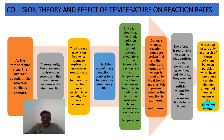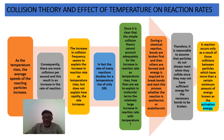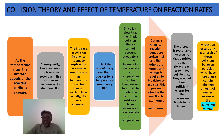Since it is clear that the simple collision theory cannot account adequately for the increase in reaction rate as temperature rises, how then are we to explain, in molecular terms, the relatively large increase in reaction rate with temperature? During a chemical reaction, bonds are broken first, and then bonds are formed, and energy is required to break bonds and start this process, whether the reaction is exothermic or endothermic.